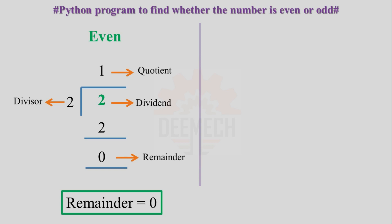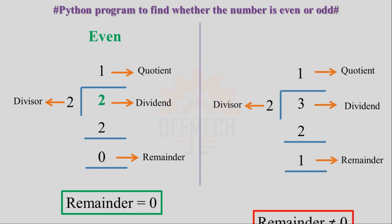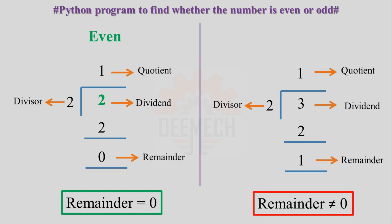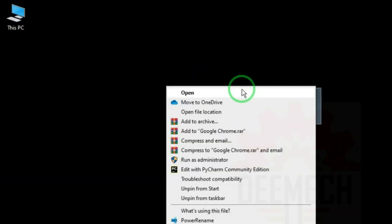In another case, the user will enter 3. That 3 will be divided by 2. 2 ones are 2, remainder is 1. 3 is the dividend, 2 is the divisor, 1 is the quotient, and 1 is the remainder. When reminder is not equal to 0, the user-entered number will be printed as odd.